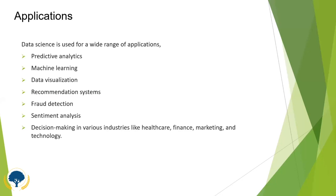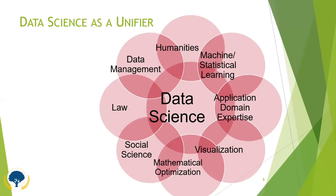Data science can be considered a unifier. It consists of machine learning, statistical learning, domain expertise, visualization, mathematical optimization, social science, data management, data mining, and humanities. It is a unified technology, and data science is a trending technology for upcoming research, with plenty of research scope for PhD and other research students.